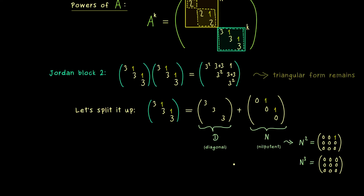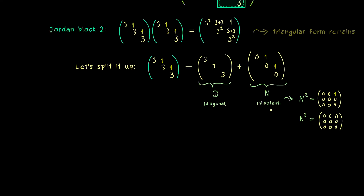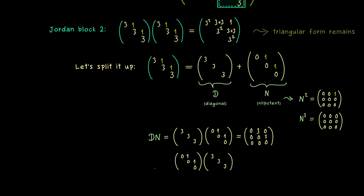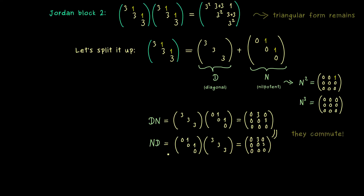The second ingredient we need is that the two matrices D and N commute. This is not hard to show — we just do the two matrix multiplications. For D times N: the first column is the zero vector, the second column is 3, 0, 0, and the third column is 0, 3, 0. For N times D: the first column is the zero vector, the second column is 3, 0, 0, and the last column is 0, 3, 0. We have exactly the same result, therefore D and N commute. This is a really helpful result because it's what we use for our matrix exponential.